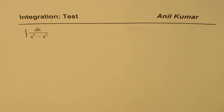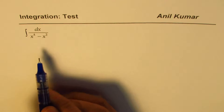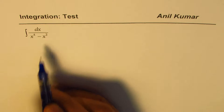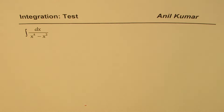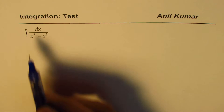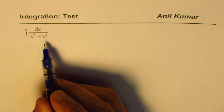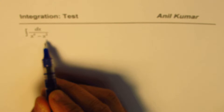I'm Anil Kumar sharing with you test questions on integration. This one here is we need to integrate dx over x to the power of 4 minus x squared. You can pause the video, answer the question, and then look into my suggestions. This is a rational function, so we should try partial fractions.